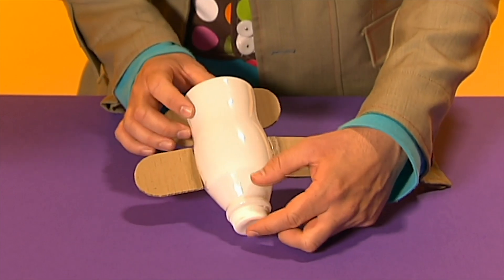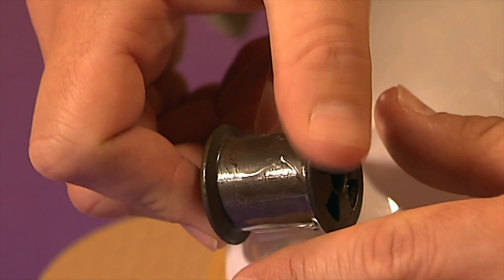Turn over the bottle and tape a cotton reel to the other side for the wheels.